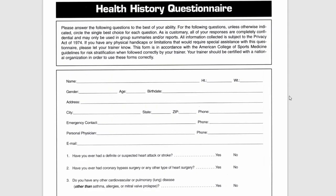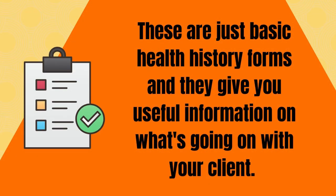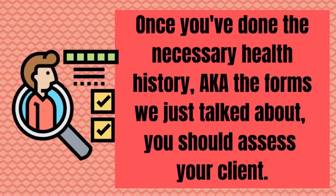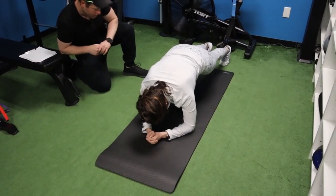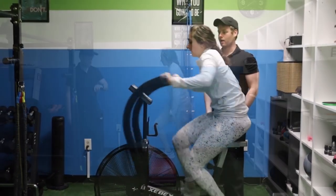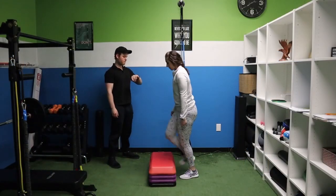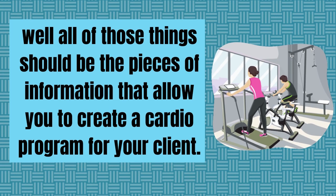Before you program cardio for anyone, you should have them fill out the PAR-Q, the health history questionnaire, and the informed consent. These are basic health history forms that give you useful information on what's going on with your client — and filling them out also helps to cover your liability. Once you've done the necessary health history, you should assess your client. My assessment is here on YouTube and its purpose is to show where your client is strong and weak, and to get a baseline to measure progress from in the future. Your client's health history, assessment, and personal goals should all be the pieces of information that allow you to create a cardio program.